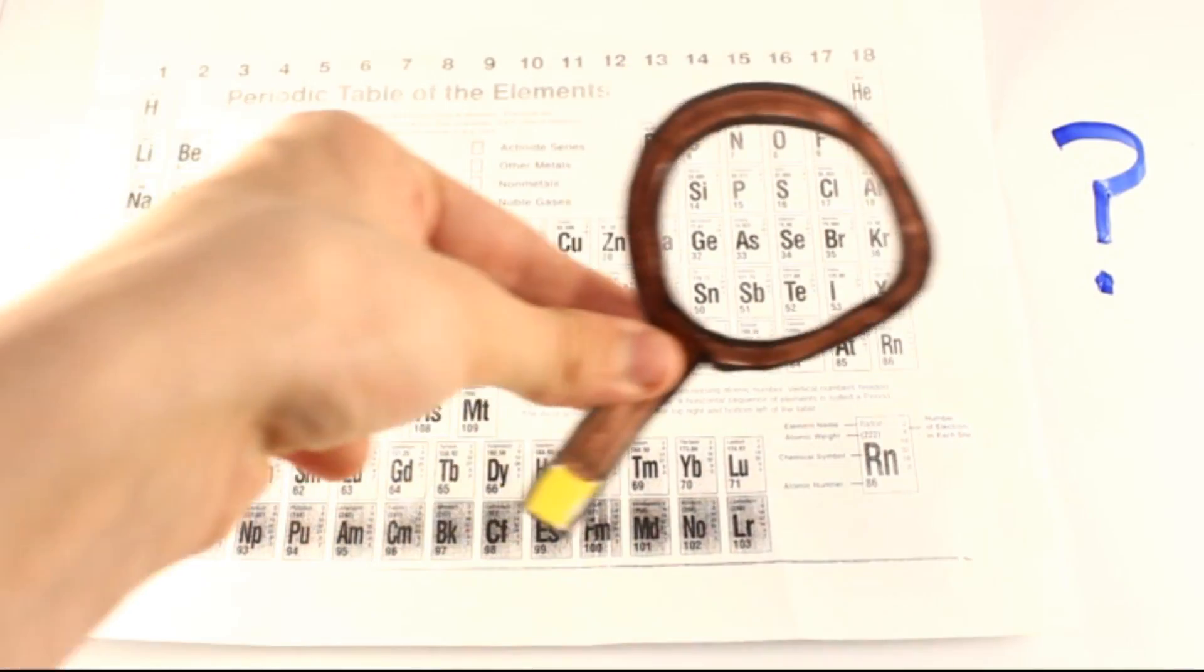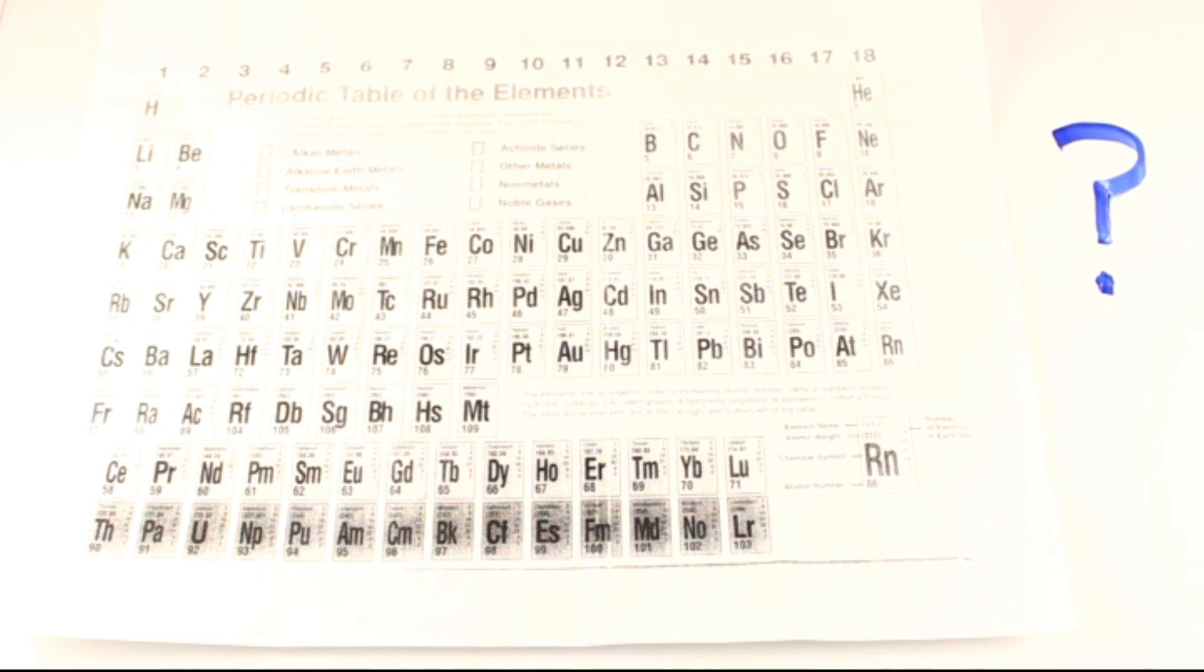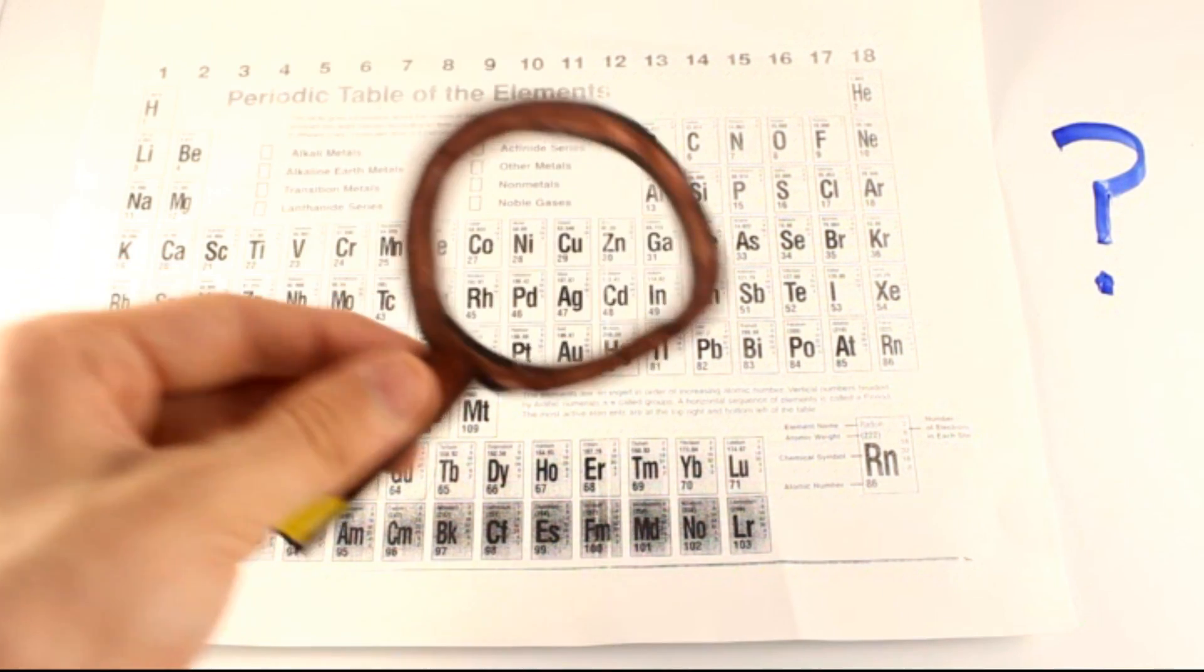But how do we get things like water? It's not on the periodic table. You may know that water is H2O, but what does that mean? To answer that question, we need to take a look at an atom.